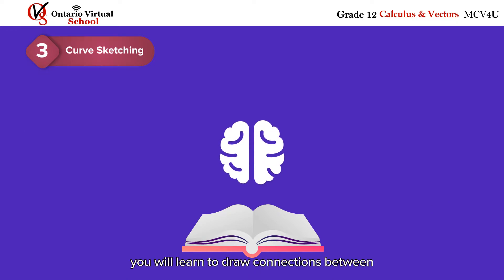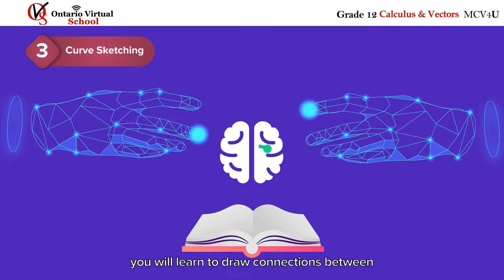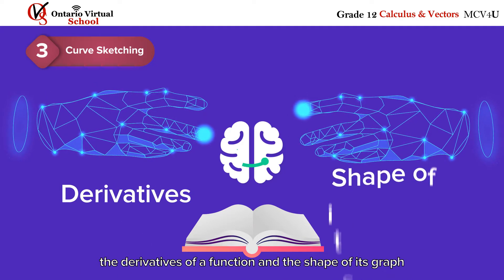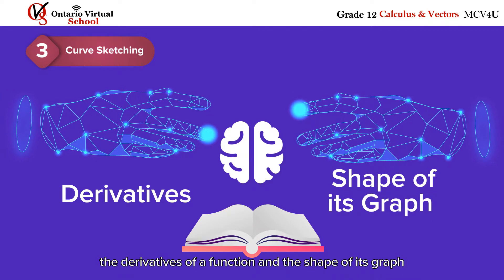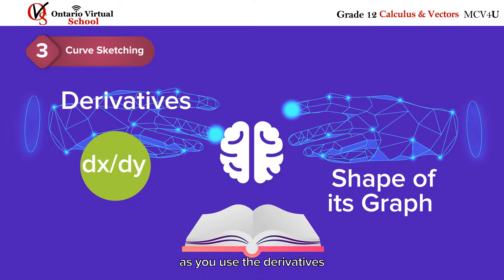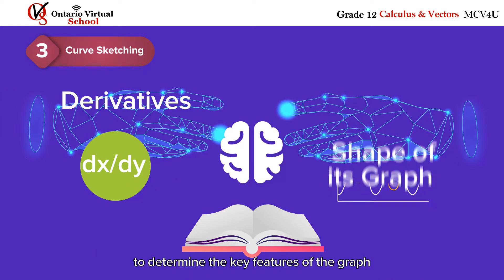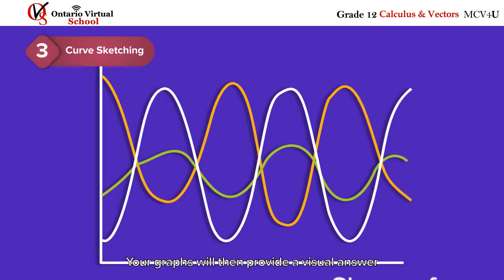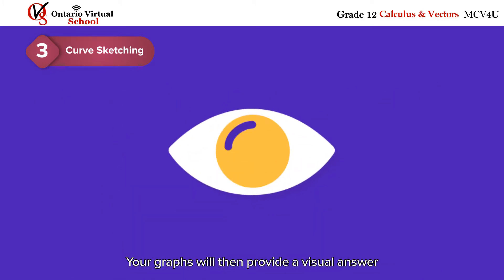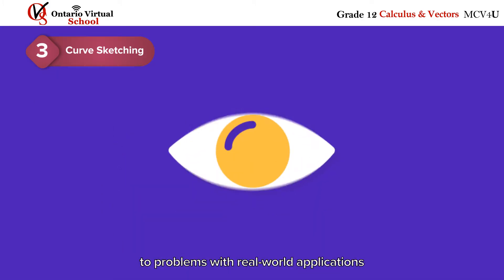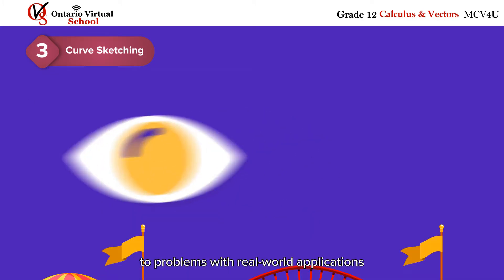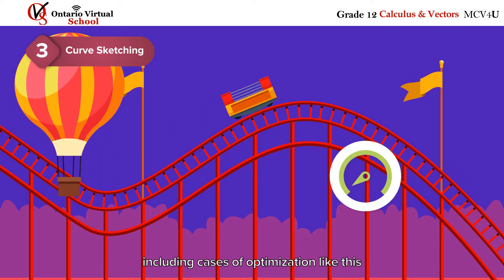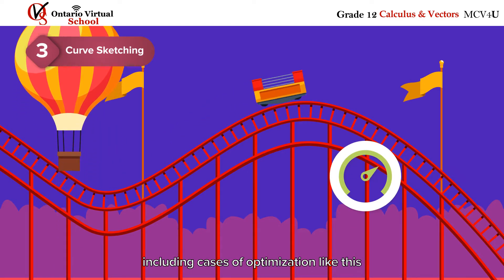In this unit, you will learn to draw connections between the derivatives of a function and the shape of its graph, as you use the derivatives to determine the key features of the graph. Your graphs will then provide a visual answer to problems with real-world applications, including cases of optimization like this.